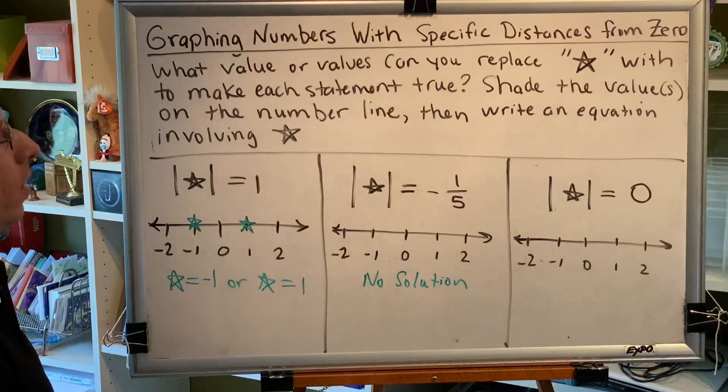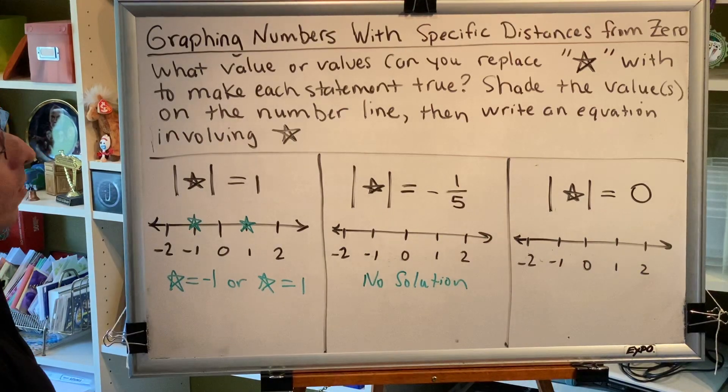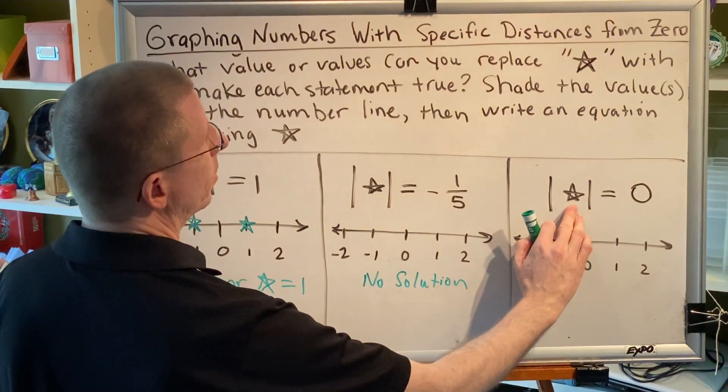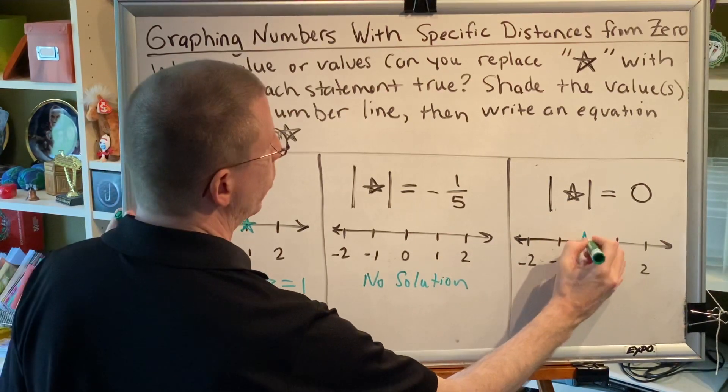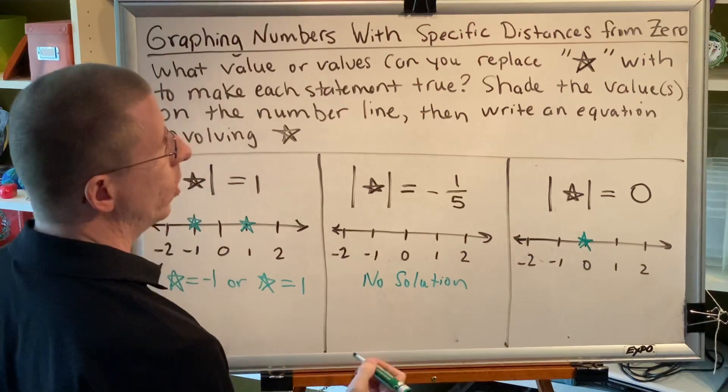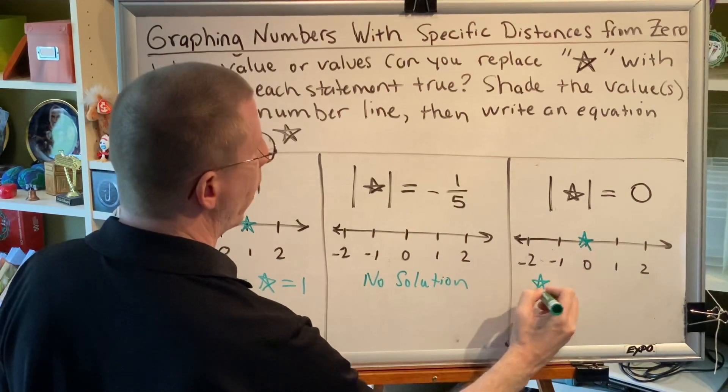Third problem. The absolute value of star equals 0. The only number we can replace the star with to make this equation true is 0. The absolute value of 0 is 0. So the star goes at 0 and we write our equation: star equals 0.